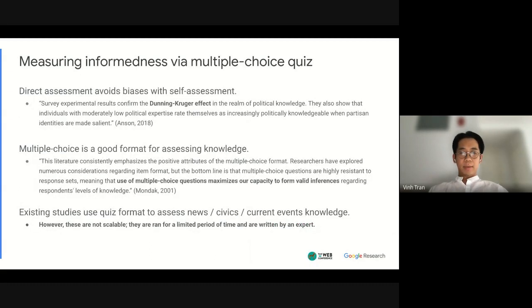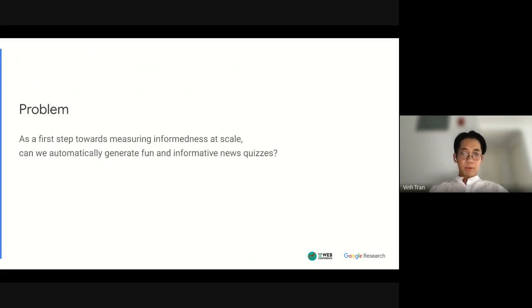And so we choose to do this via a multiple choice quiz and there's been a lot of works in the past that have shown that this is a good approach to take. Primarily it actually avoids some biases that you might get if you were to ask people to self-assess their abilities. And in fact there are existing quizzes out there that tried to do this but their main issue is that they're not scalable and they're usually taken from a fixed pool of questions that were handwritten by some expert. So the problem that we try to tackle is as a first step can we actually try to automatically generate these fun and informative questions from the news?